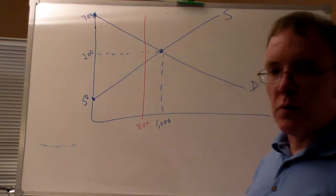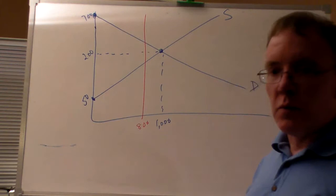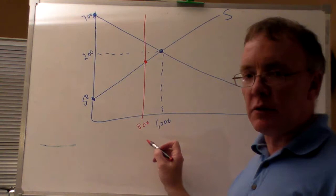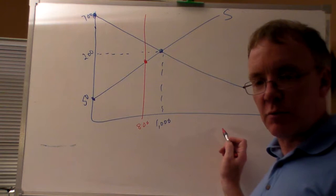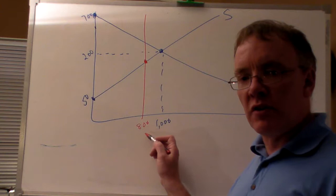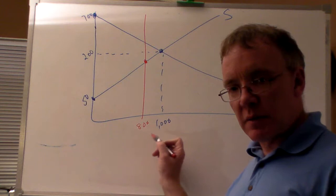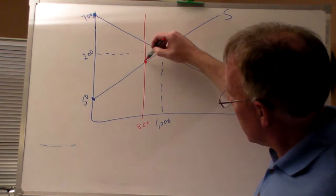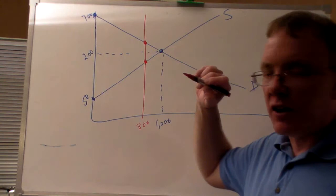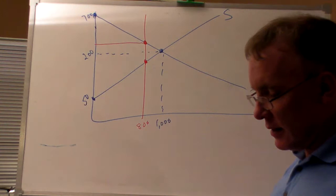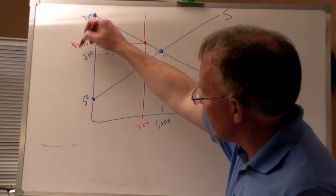The consequence would be a quantity of 800 spaces instead of the equilibrium 1,000. If they had set a quota of 2,000 spaces, it would have had no effect since it's above the equilibrium quantity. A quota below the equilibrium quantity is binding. With 800 spaces, producers would charge off the demand curve at the 800-space level, which would be $300 per semester after the quota.